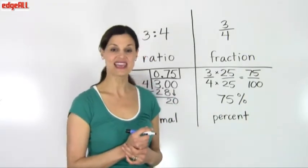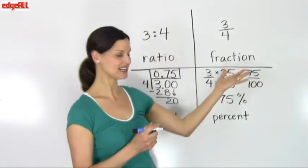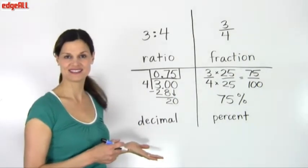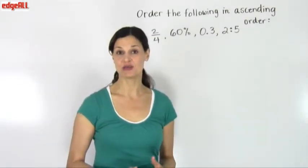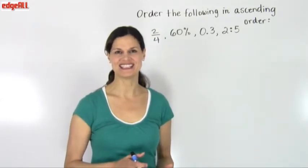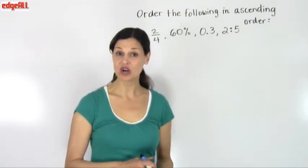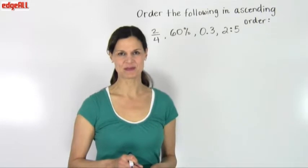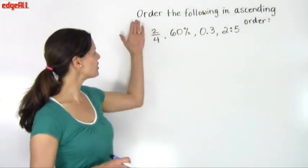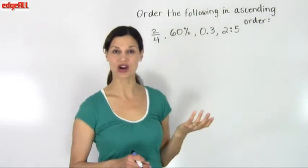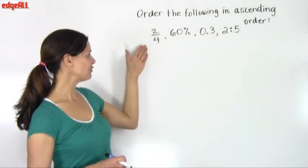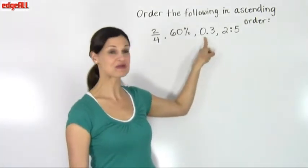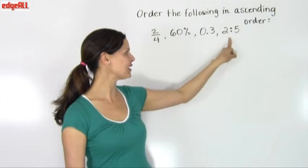Now you know that we can convert any ratio, fraction, percentage, or decimal to any of the other forms. Many times you will have to solve a problem where your numbers are given in different forms. You will need to convert these numbers to one common form before you can solve the problem. So in our example, we are asked to order the following in ascending order. So we've got a fraction of 2 fourths, we've got a percentage of 60%, a decimal of 0.3, and a ratio of 2 to 5.